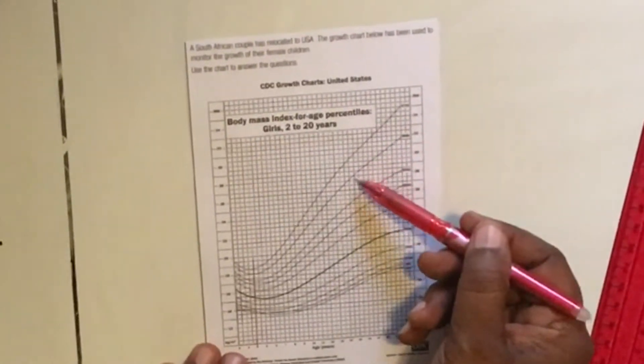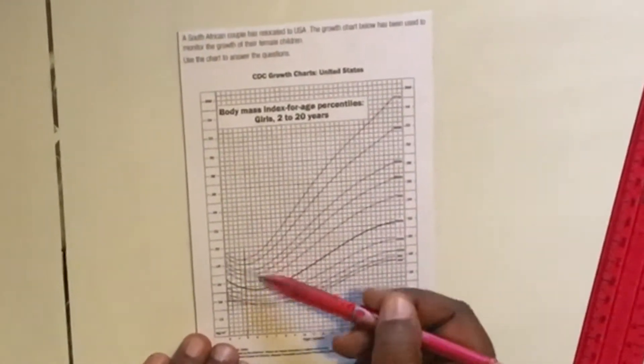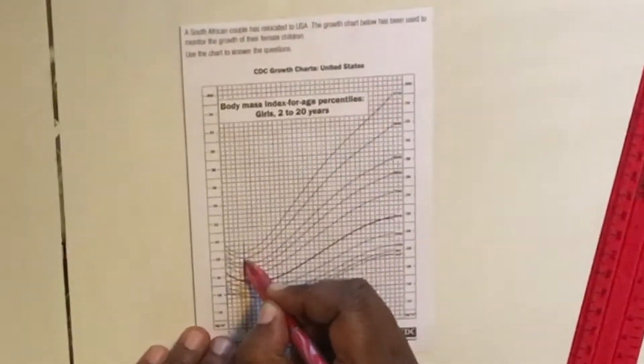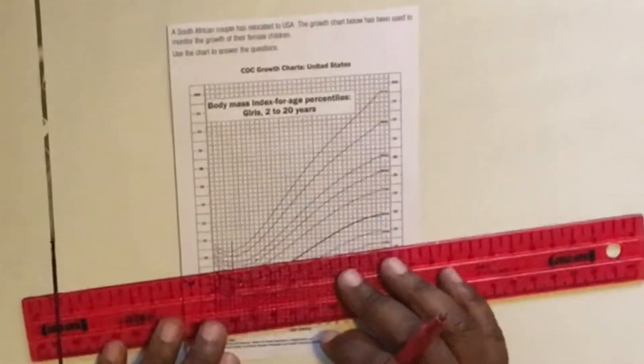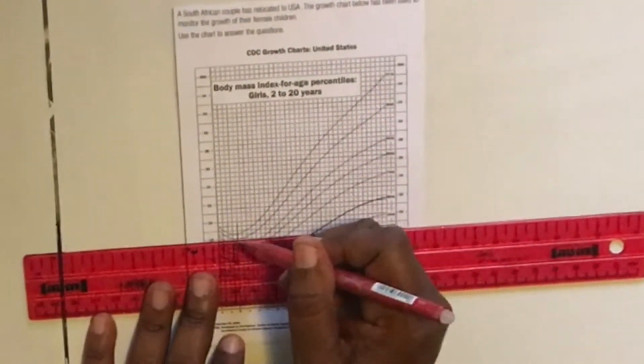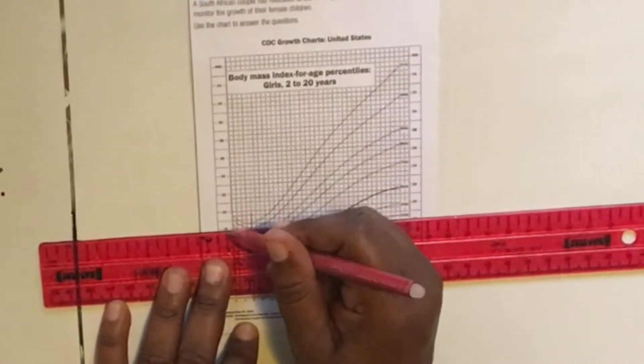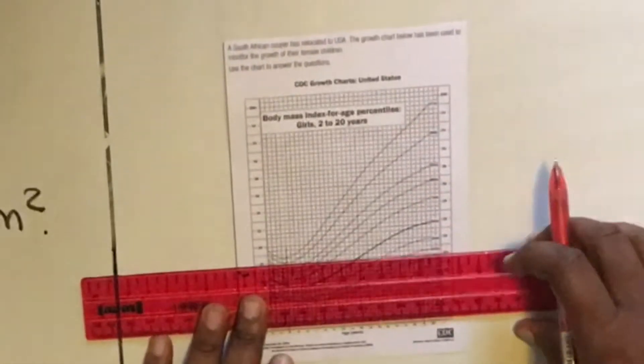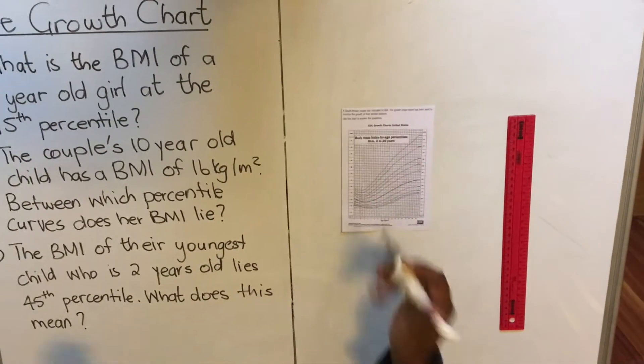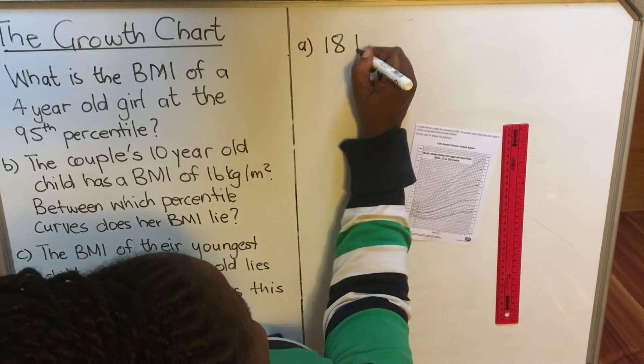Then you go to 95th percentile. You remember they've written them for you here. Then you go to that curve, you go along the curve until you touch that line that you have drawn. So here where the curve and the line meet, that's your answer. Now then I take my ruler again, I go and look at that point, what is the body mass index? The body mass index, you remember, they've written on the sides. Then I go to the body mass index, it says 18.